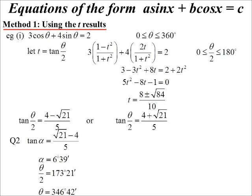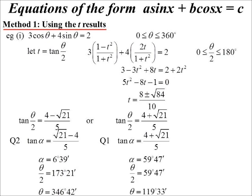4 plus root 21 over 5, clearly that's positive, so I just want the acute angle here because it's just the first quadrant. 59 degrees 47 minutes is the acute angle, which means that's what theta over 2 is. Double it, we get our other possibility: 119 degrees 34 minutes.